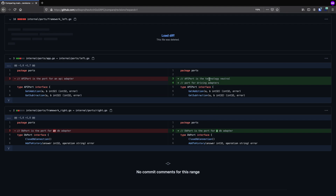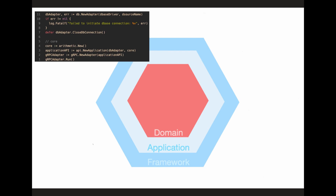These two ports represent our application boundary. The only way for outside actors to interact with our application is to either drive the application via the left port, or to be driven by the application via the right port. Going back to our diagram to map everything out — we only have two ports: the right side port where our database adapter plugs in, and the left side port where our gRPC adapter plugs in. It's relatively easy to see how the database adapter plugs into the application because we're plugging this adapter directly in, and the type for that parameter is an interface for our right side port — so our MySQL database adapter plugs in right here.